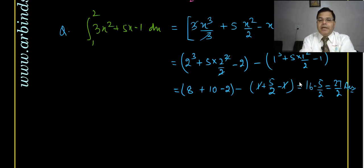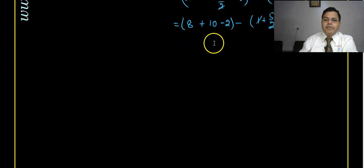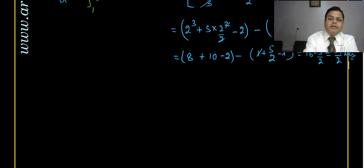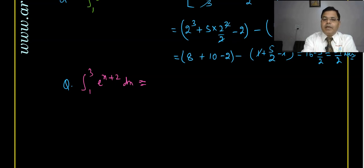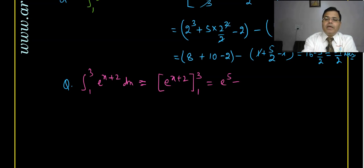Whether it is an algebraic, trigonometric, or exponential function, a fixed value will come. For example, ∫(1 to 2) e^(x+2) dx. The integration of e^(x+2) is e^(x+2), with coefficient of x being 1. Putting limits: e^(2+2) − e^(1+2) = e⁴ − e³ = e³(e − 1) is the answer.